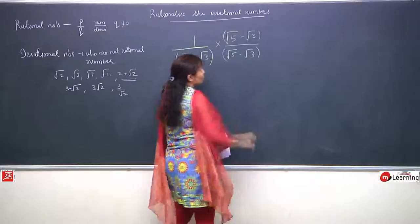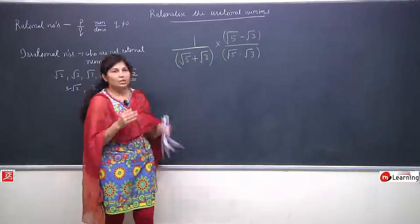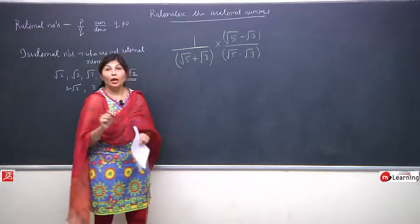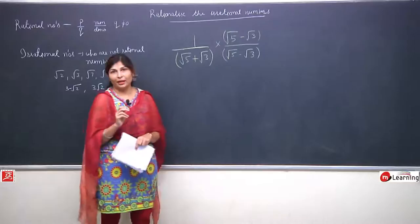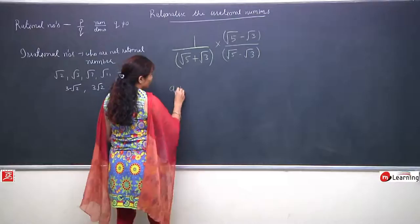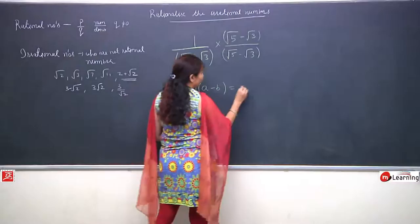Earlier what were we doing? We were simply looking at the number and multiplying and dividing by that same number. But now the situation is totally changed. Here there are two irrational numbers with an operation between them. So we will look at the operation very carefully, then take the just opposite sign. Here it was plus, so now we have taken minus.